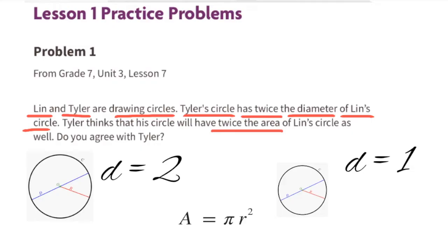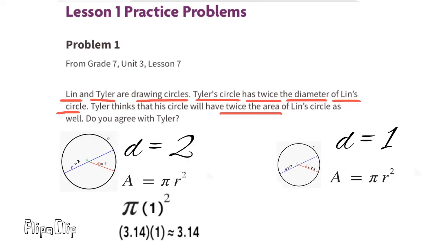If the diameter of Lynn's circle is one unit, the formula for finding the area of a circle is pi times the radius squared. Since the radius is half the diameter, the radius of Tyler's circle would be one unit. We substitute r with 1: pi times 1 squared. One squared equals one, and using 3.14 for pi, 3.14 times 1 equals 3.14. The area of Tyler's circle is approximately 3.14 units squared.